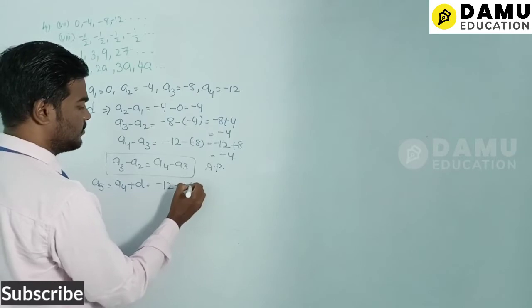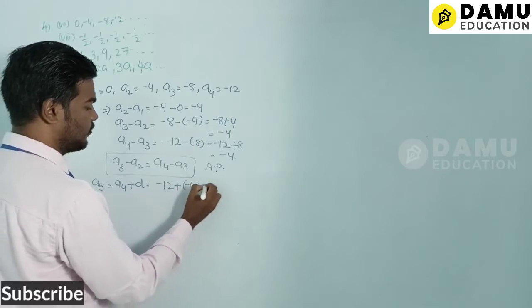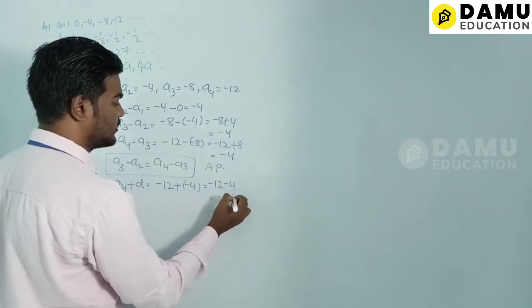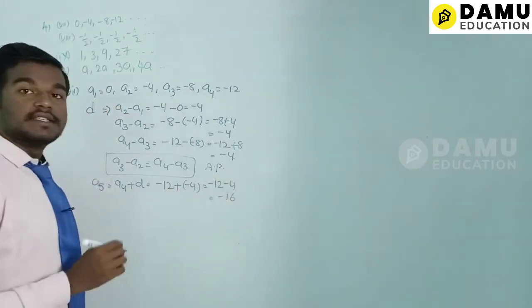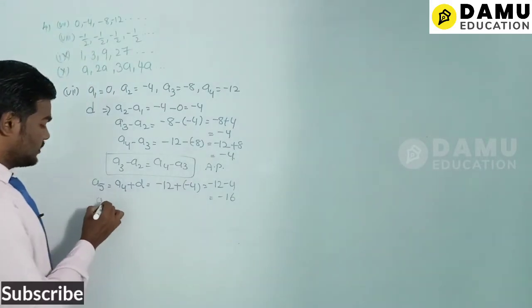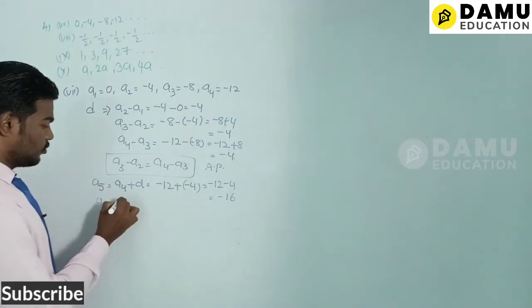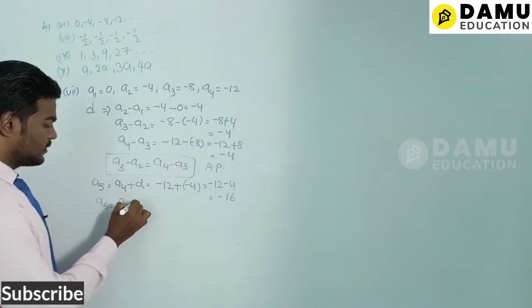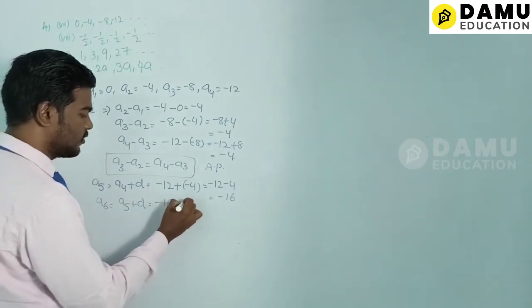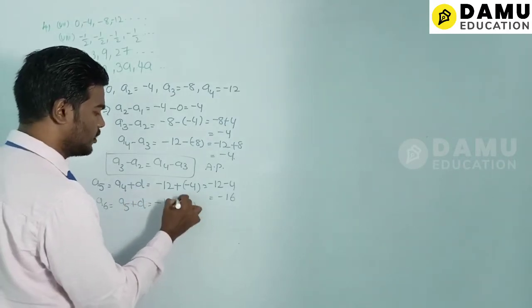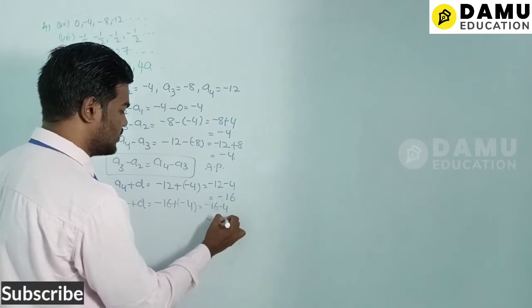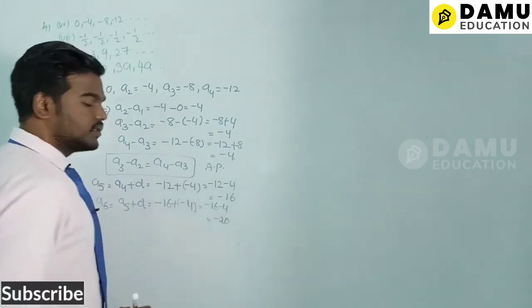Then a6 = a5 + d = −16 + (−4) = −16 − 4 = −20.